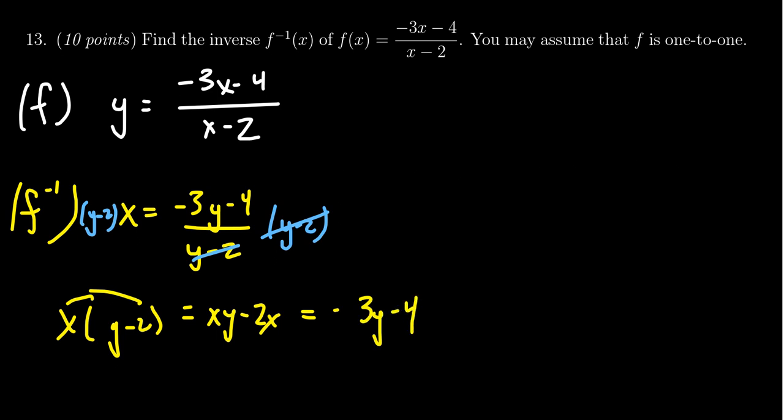Our goal is to combine together the y's. We have a y right here, and we have a y right here. So I'm going to move things from one side of the equation to the other. The negative 3y will move to the left-hand side by adding 3y to both sides. The negative 2x will move to the right-hand side by adding 2x to both sides. That gives us xy plus 3y equals 2x minus 4.